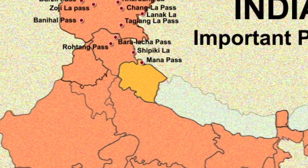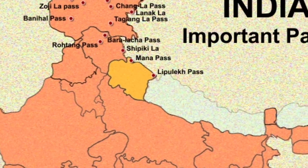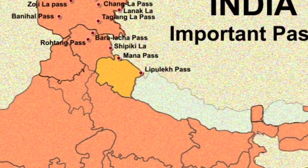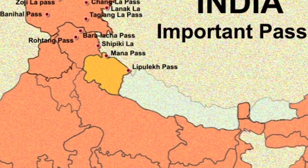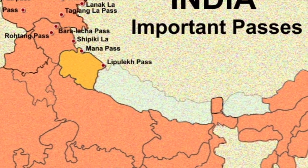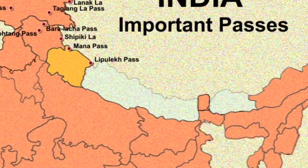Then it is Lipu Lekh Pass. Lipu Lekh Pass is a disputed Himalayan pass controlled by India but also claimed by Nepal, near their tri-point with the Chinese trading town of Taklakot in Tibet.